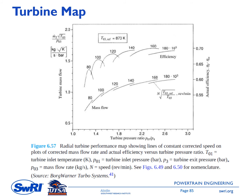The next figure shows the turbine map — a radial turbine performance map showing lines of constant corrected speed plotted on corrected mass flow rate versus turbine efficiency and turbine pressure ratio. The task is to select the turbine size so that the engine operating condition is at maximum efficiency.